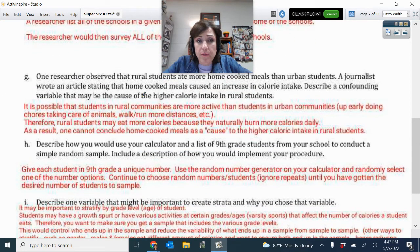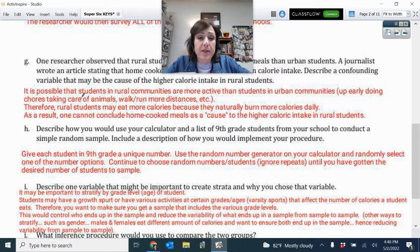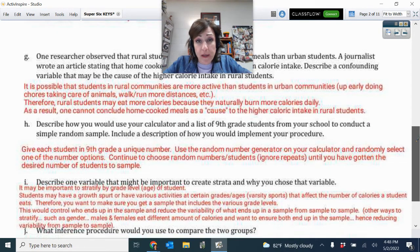And then here, the journalist was thinking that the rural students just had home-cooked meals, and that's why they had higher calories. And so they asked you another confounding variable that might be the reason that it's higher calories, not because it's the home-cooked meals. And so I said rural communities may be more active. They've got chores, especially if they're doing like farm chores or whatever. Maybe they're walking more, running distances. Therefore, they might have more calorie intake. And so then that could be the reason that they are burning more calories in a day and having more calorie intake than the more sedentary urban students.